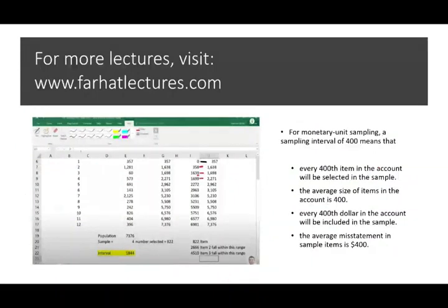For monetary unit sampling, a sampling interval of 400 means what? Monetary unit sampling treats each dollar as a unit, so the larger the dollar amount in the population, the larger the probability that amount will be selected. That's monetary unit sampling in a nutshell. I have 20 to 25 minutes of explanation about this topic on my website, farhatlectures.com. Let's answer this question with the little bit of information we have.